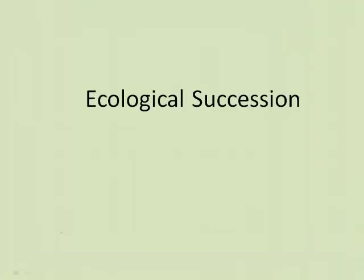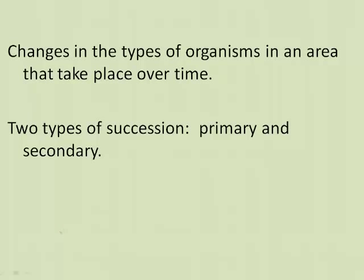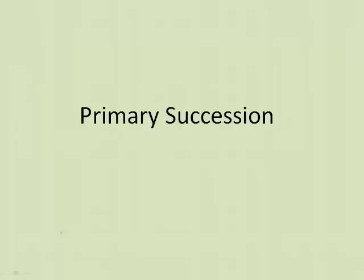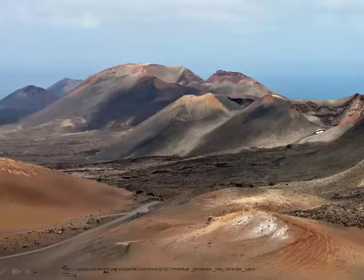Let's take a look at how ecosystems change over time when we talk about ecological succession. Ecological succession refers to changes in the types of organisms in an area that take place over time. There are two types: primary and secondary. In primary succession, you basically begin with an environment with no soil.